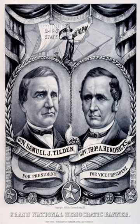The 1876 Democratic Platform demanded the repeal of the Specie Payment Resumption Act, condemned the Grant Administration's corruption, reaffirmed the Reconstruction Amendments, denounced Congressional Reconstruction as both coercive and corrupt, supported a tariff only for revenue, conservation of public lands, and civil service reform. Meanwhile, the Republicans "waved the bloody shirt" by associating the Democrats with the Confederacy and criticized Tilden's questionable tax returns, early association with Boss Tweed.